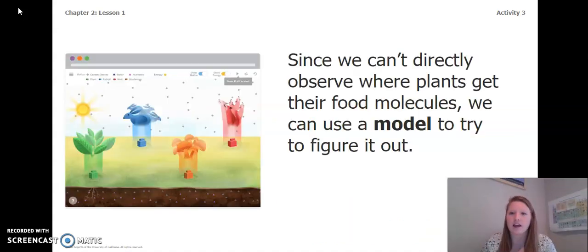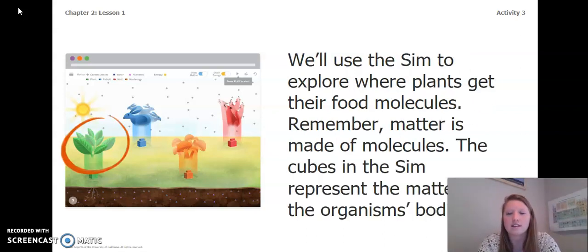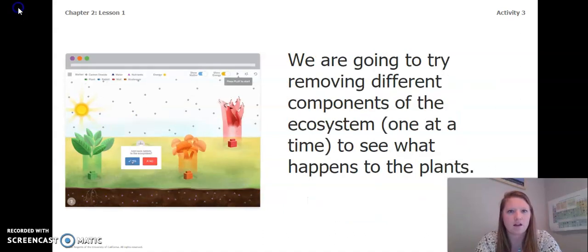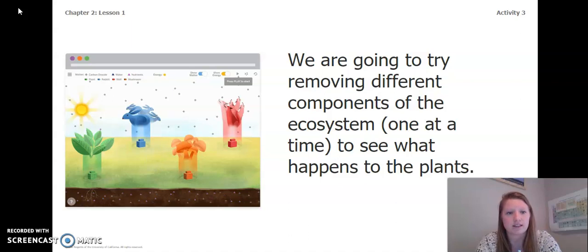Since we cannot directly observe where plants get their food molecules, we can use a model to try to figure it out. In this lesson, we are going to use the sim to explore where plants get their food molecules. Remember, matter is made of molecules. The cubes in the sim represent the matter of the organism's bodies. We are going to try removing different components of the ecosystem, one at a time, to see what happens to the plants.